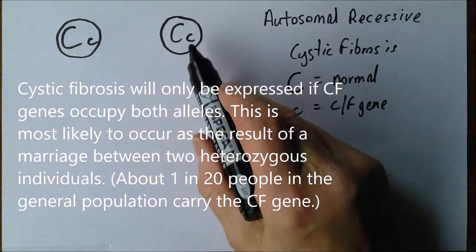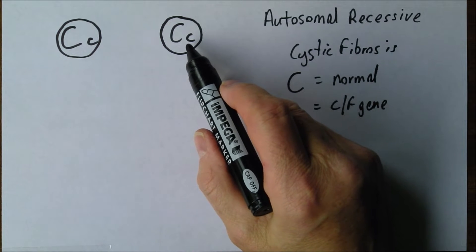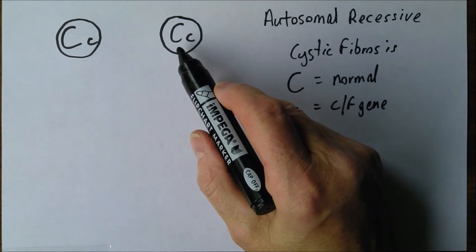In most Western populations, this describes about 1 in 20 of the population. I may be carrying a cystic fibrosis gene but don't know because I have a perfectly normal dominant gene.